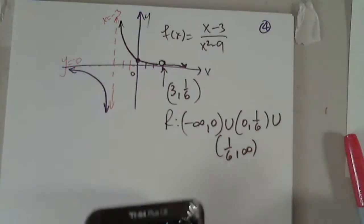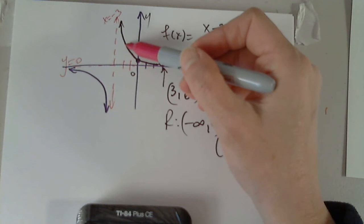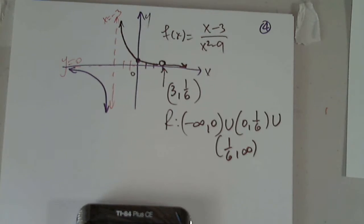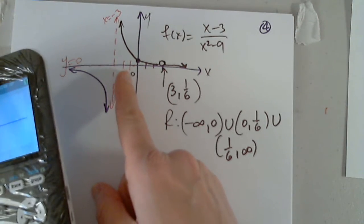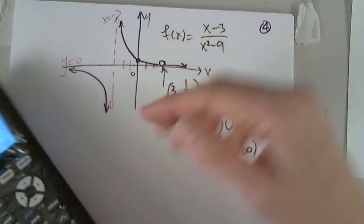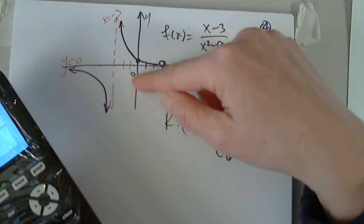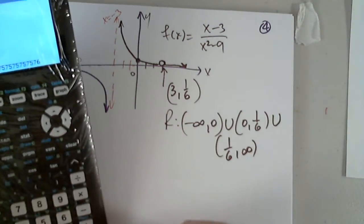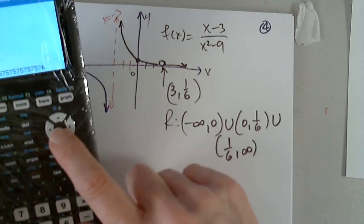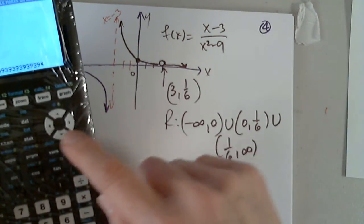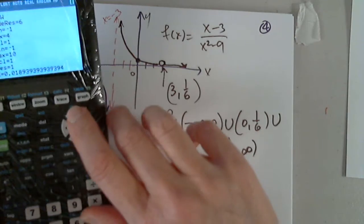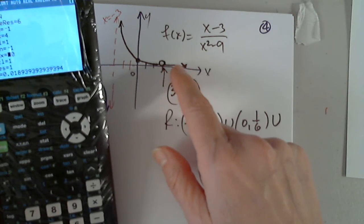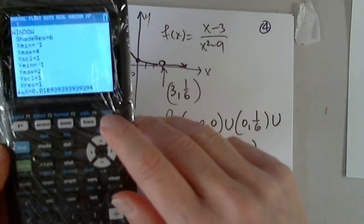But now, I'm going to zoom in. And what I would like to see is basically this piece. That's all I care about. To show why we have to exclude 1 over 6. So, I'm going to say from negative 1 to positive 4. With a negative 1 to positive 2. Or positive 1. Okay? So, negative 1 to positive 4. And scale is 1. But I want y-minimum to be negative 1. And y-maximum to be 2. Okay? Now, let's see what happens.